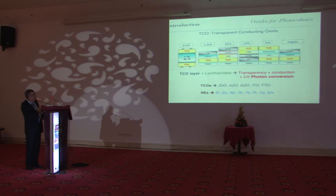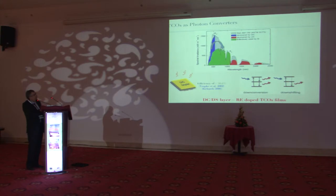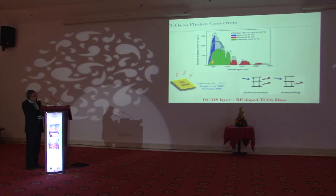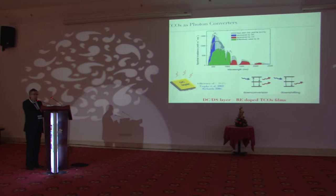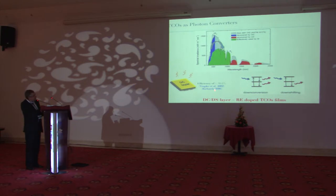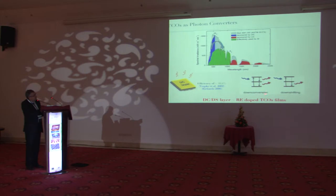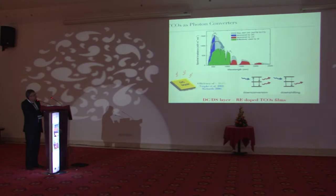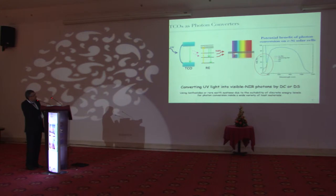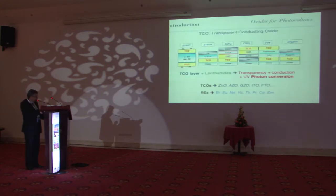This slide reminds us why it might be interesting to use TCOs. TCO is already used as an important material for PV devices. The point of combining rare earths with TCOs is to convert part of the UV light into visible or near-infrared light, to increase the efficiency of the solar cell behind. This can be done through the down-conversion process or the downshifting process.